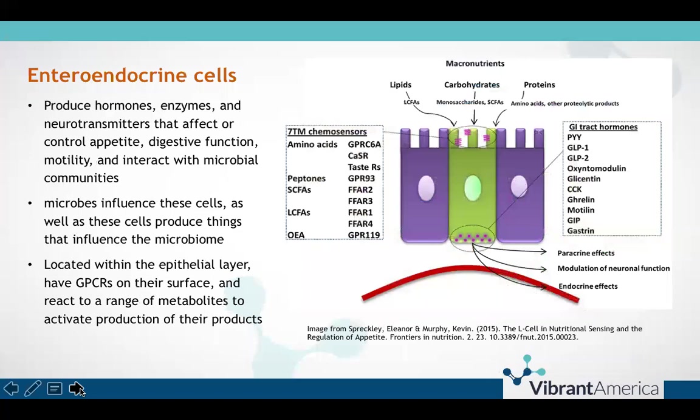Enteroendocrine cells are another type of cell found along the epithelial lining. While they do not necessarily play a very direct role in barrier integrity itself, they do host G-protein coupled receptors, which signal the production of various substances that contribute to barrier integrity. Enteroendocrine cells produce a wide range of hormones, enzymes, and neurotransmitters that are directly responsible for appetite, digestive function, motility, and microbial tolerance to our commensal bacteria. There is a two-way cross-talk between the enteroendocrine cells and the commensal microbes we host, so based on what nutrients interact with these cells, we either get a balanced or imbalanced immune response.